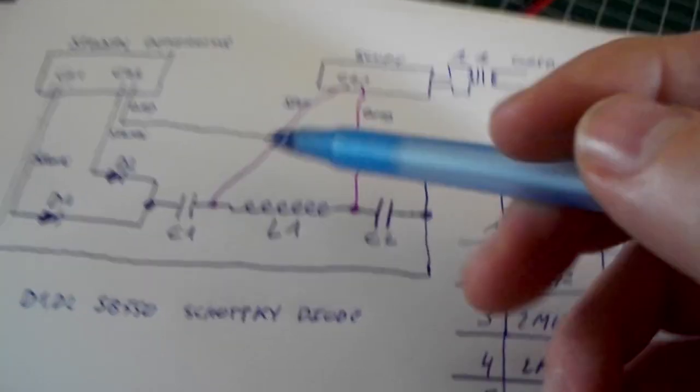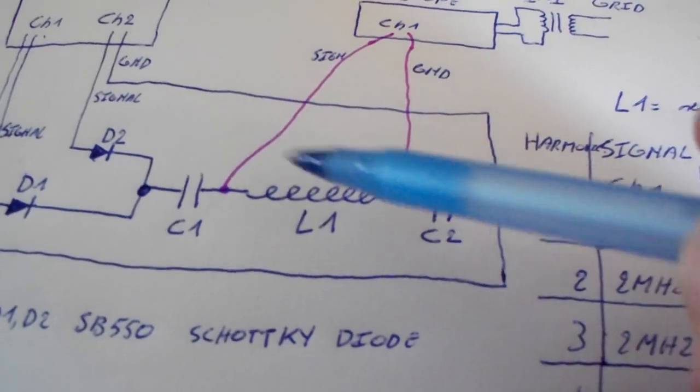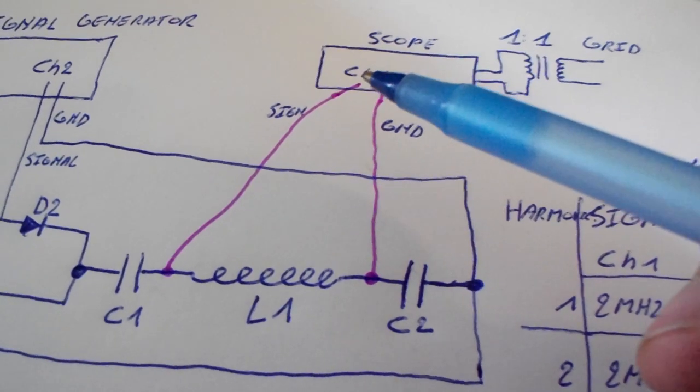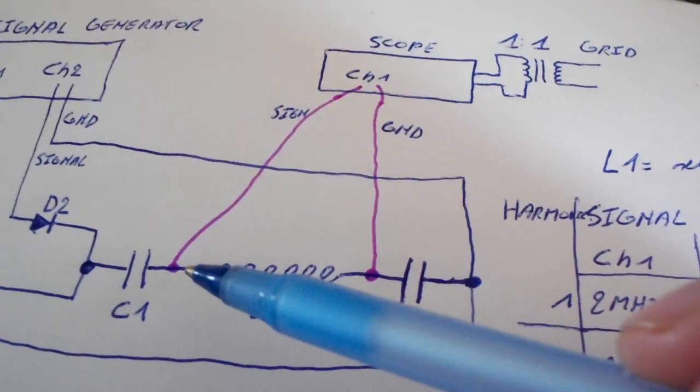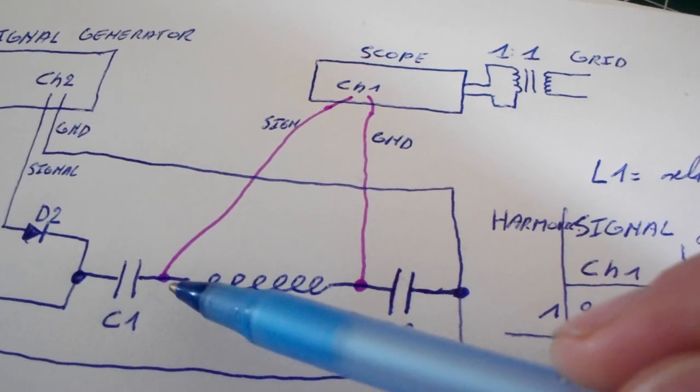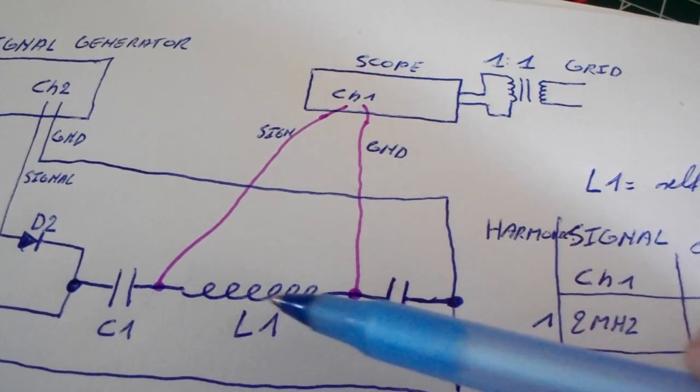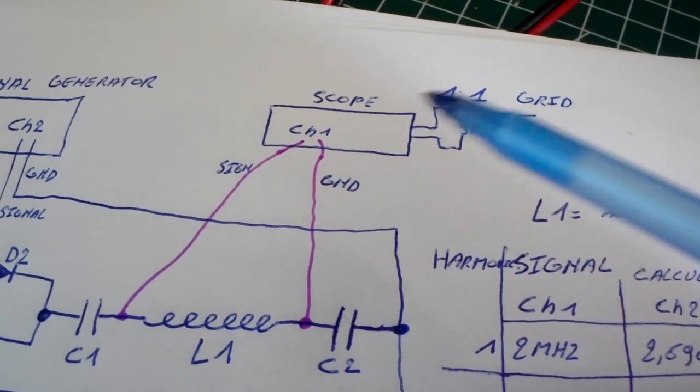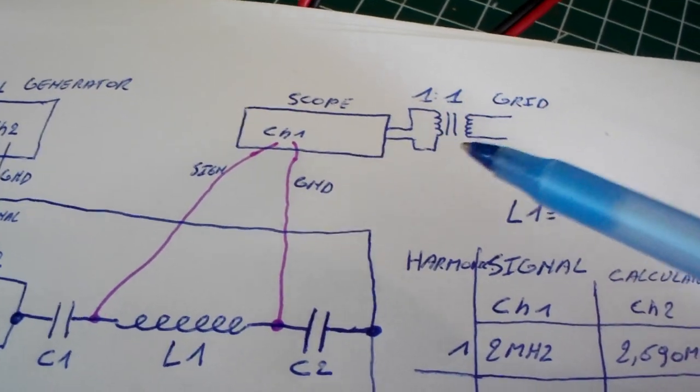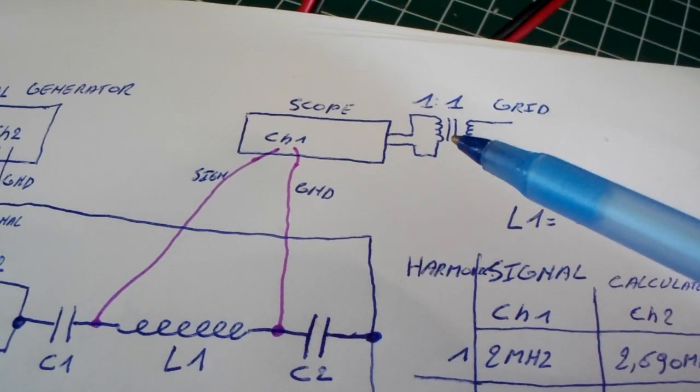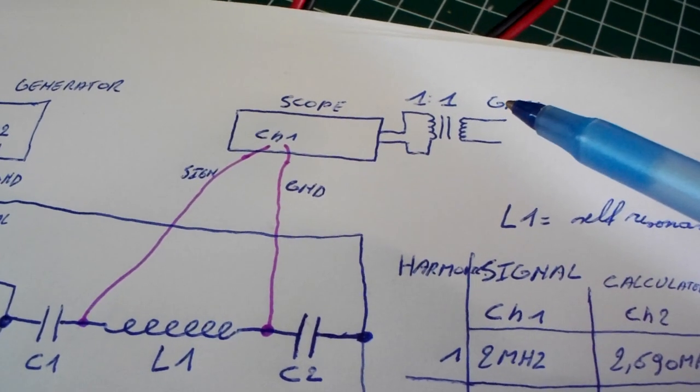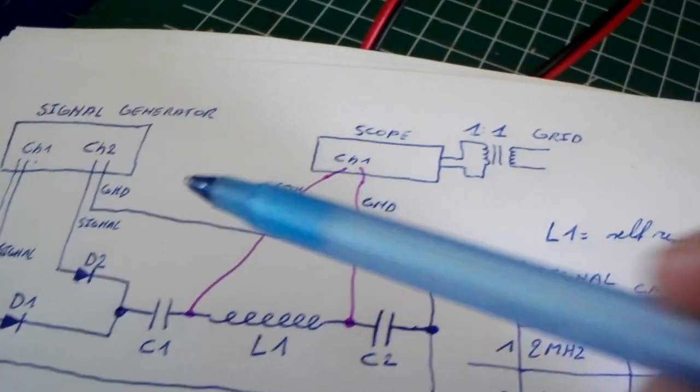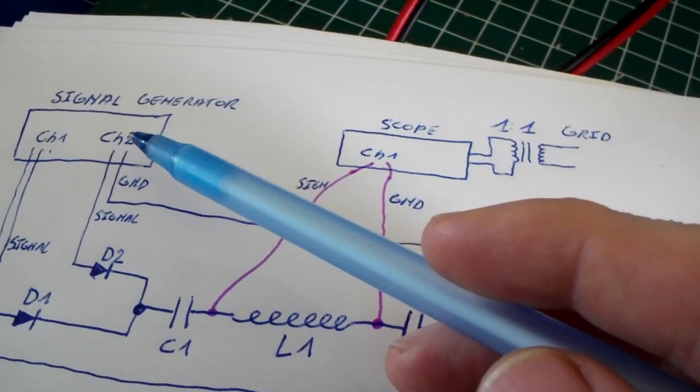For the following experiment, I connected my scope over here so I have the signal across the inductor. But it's important that we have a one-to-one transformer in between so that we don't have a direct connection to the grid. Otherwise our ground connection will be directly to our signal generator.